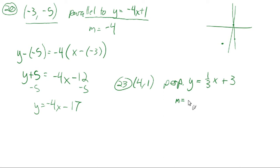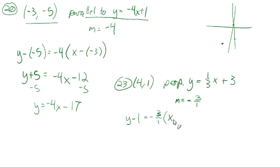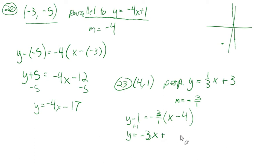So our slope is negative 3. Using point-slope form: y minus 1 equals negative 3 times x minus 4. Distributing the negative 3: negative 3 times x is negative 3x, and negative 3 times negative 4 is positive 12. Adding 1 on both sides gives y equals negative 3x plus 13. That's the equation of our line for number 23.